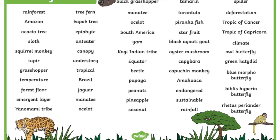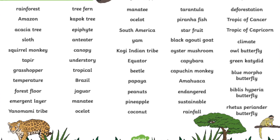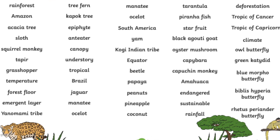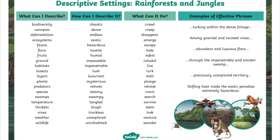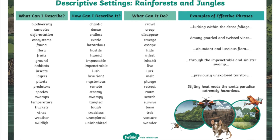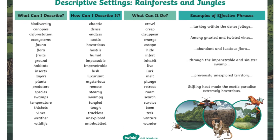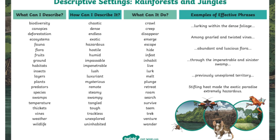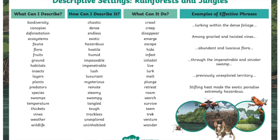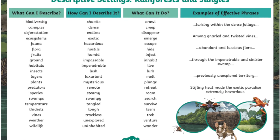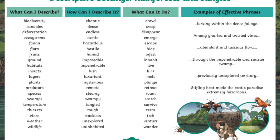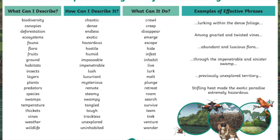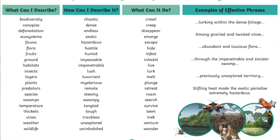Our first glance is at vocabulary. The diversity of life in these environments obviously requires an expansive vocabulary to describe it in all its wondrous glory. Words such as tropical, dense,